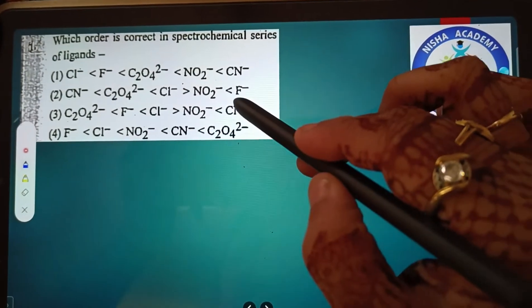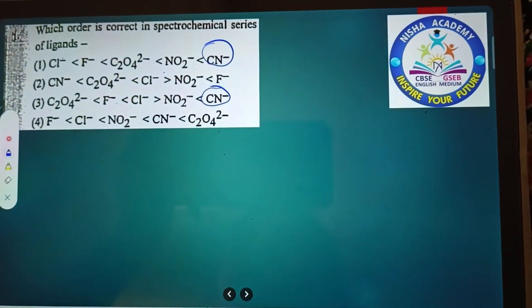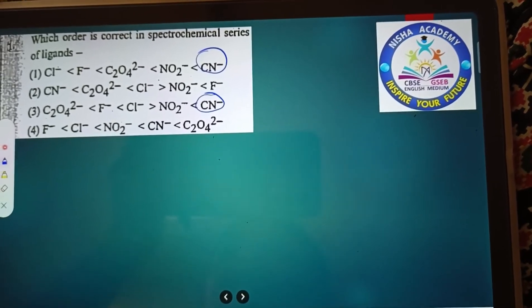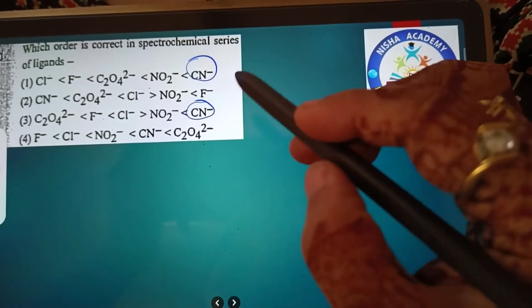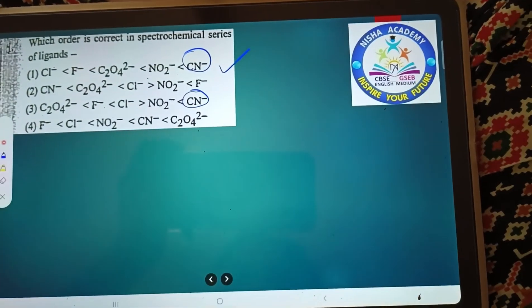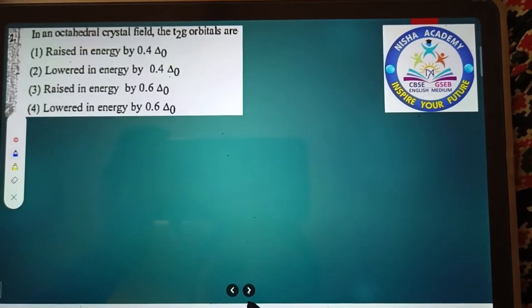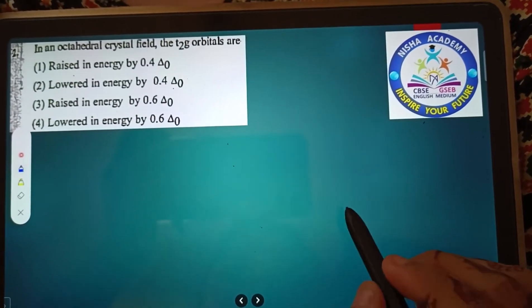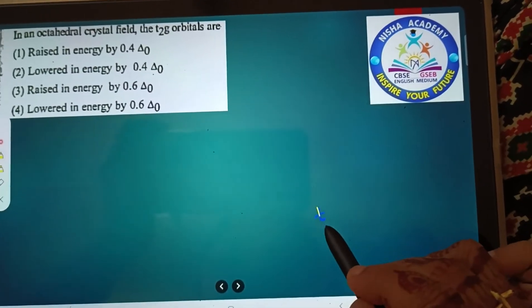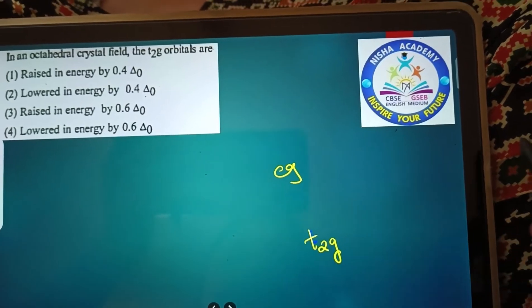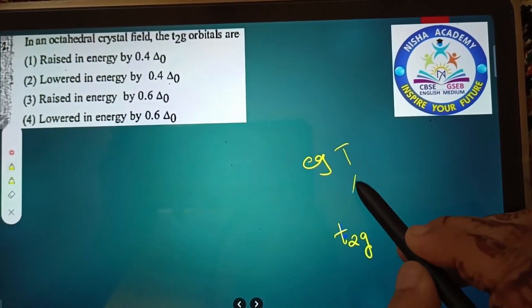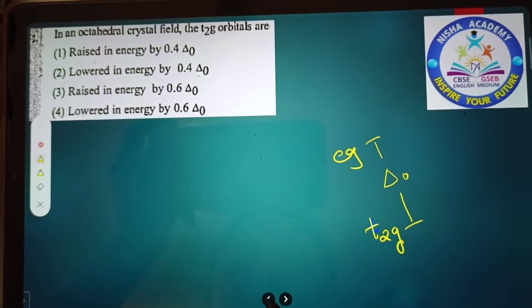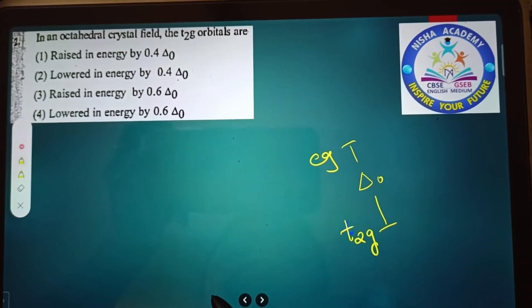Yes, CN is a strong ligand. You have options one and three. Next, NO2. In octahedral crystal field, the t2g orbitals are lower and eg orbitals are on top, with the energy gap represented by delta zero. The answer is lowered in energy by 0.6 delta zero.